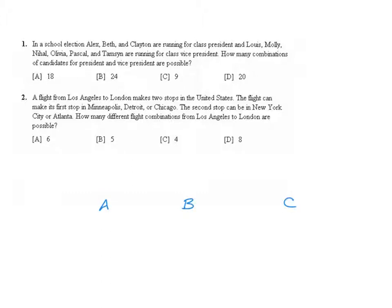And for vice president the choices are Louise, Molly, Nihal, Olivia, Pascal, and then also Tamsin. So we're going to have those same vice presidential choices for Beth, and then also the same thing here for Clayton.